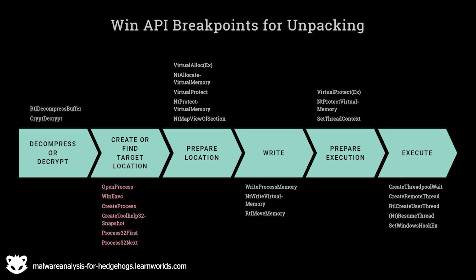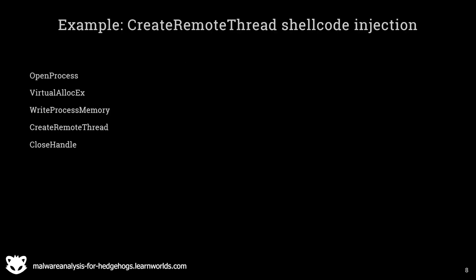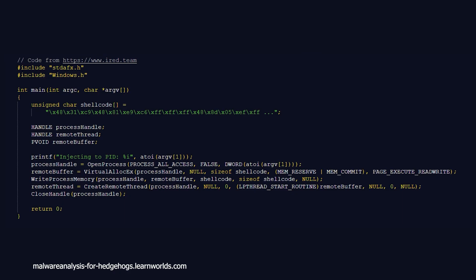Let's take a look at an example. Here's a log for create remote thread shellcode injection. Usually in such a log you will see far more API calls; this is a condensed version. It will be easier to first look at the code that is actually doing this — I took this code from iRed.team, which is a very good site if you want to look up red team code examples.